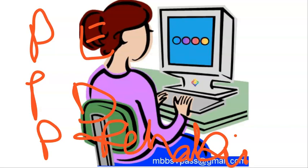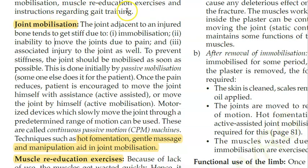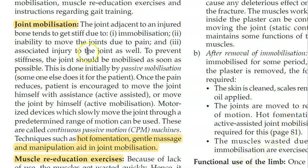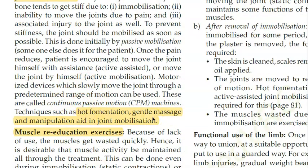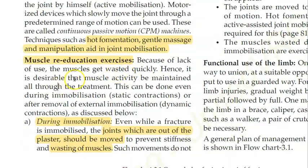Rehabilitation begins from the time of injury. Three key components are joint mobilization, muscle re-education, and others. Joint mobilization addresses stiffness in joints adjacent to the injured bone. Gentle massage, manipulation, and hot fomentation help keep the joint mobile — but only if mobilization has been prescribed. If a cast is applied to prevent movement, do not mobilize.